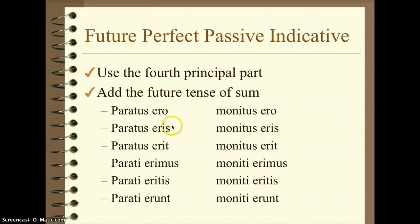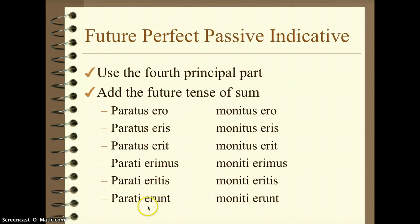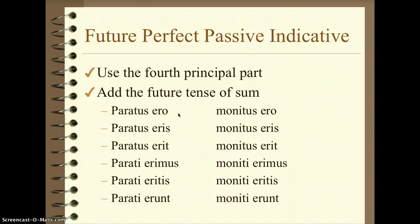Most of them are the same — ero, same; eris, same; erit, same; erimus, same; eritis, same — all the same as the active forms, except the last one. Remember when erent appeared in the last video? Erent cannot appear ever by itself as one word, so we must use erunt as the full word since this is a two-word format. Future perfect translation: it'll be will have — add been for the passive. I will have been prepared, you will have been prepared, he/she/it will have been prepared, we will have been prepared, y'all will have been prepared, they will have been prepared.